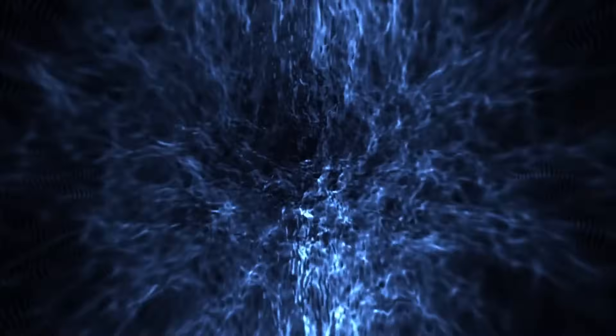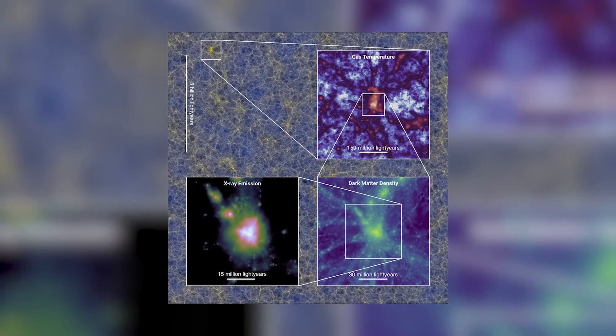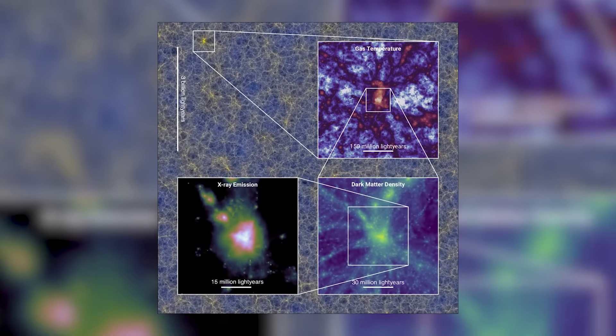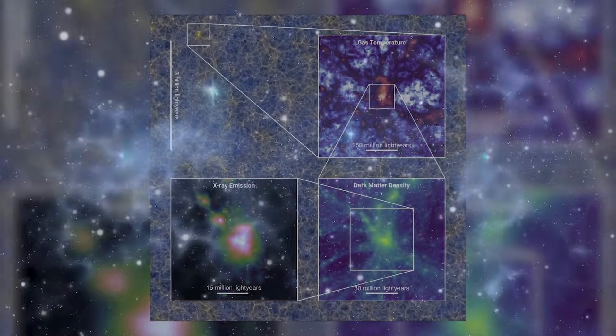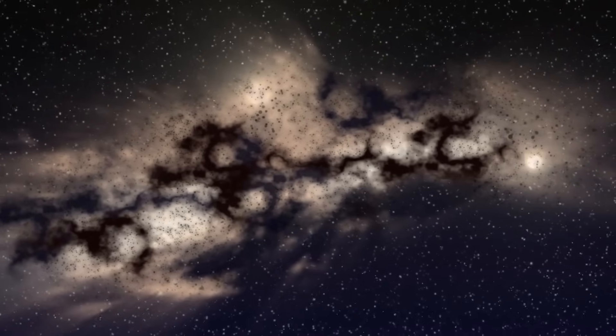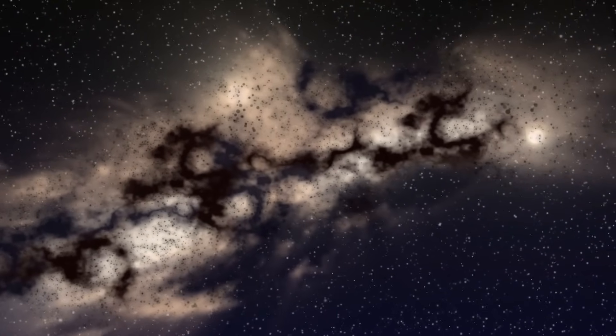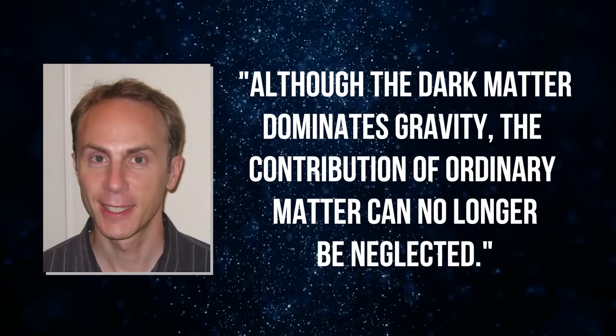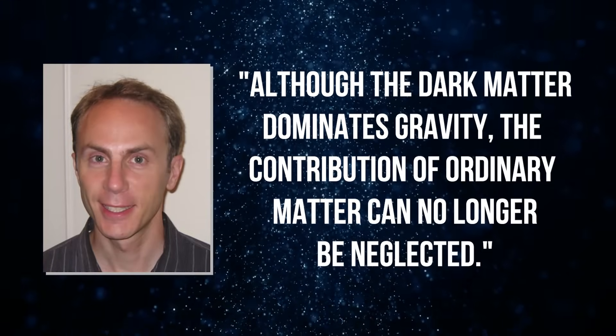What's interesting, unlike previous simulations that only considered dark matter, the new work carried out by a project called Flamingo, short for Full Hydro Large-scale Structure Simulations with All-sky Mapping for the Interpretation of Next-generation Observations, tracks ordinary matter too. As Joop Schaye, a professor at Leiden University in the Netherlands and a co-author of the three new studies on the Flamingo project, said in a statement, although the dark matter dominates gravity, the contribution of ordinary matter can no longer be neglected.